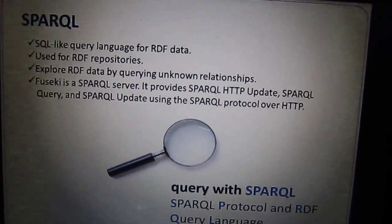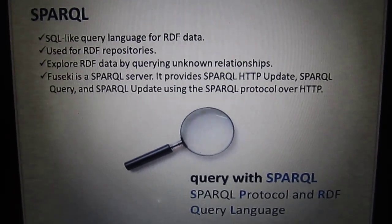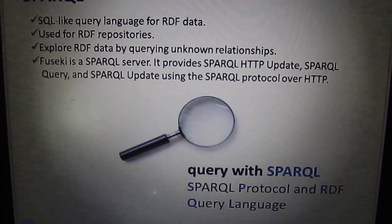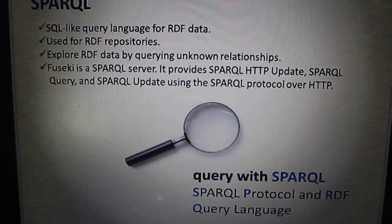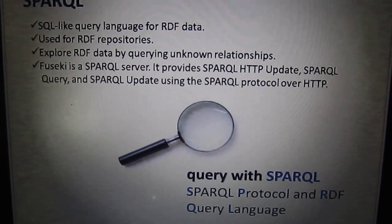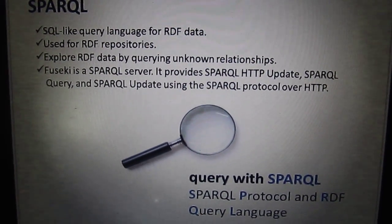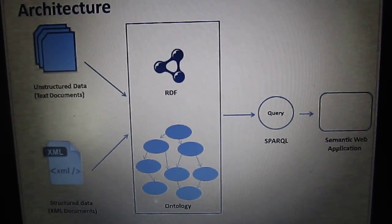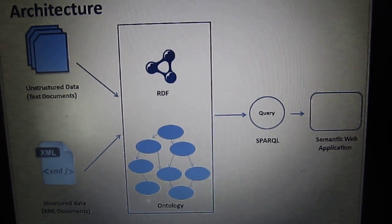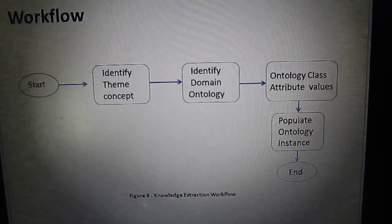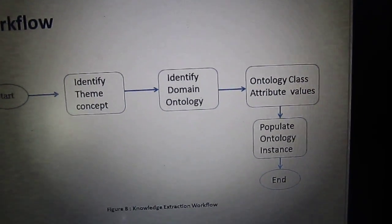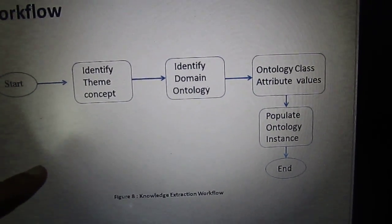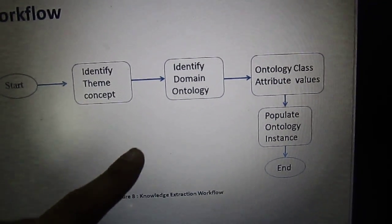In order to query OWL ontologies, we use the SPARQL language. SPARQL stands for SPARQL Protocol and RDF Query Language. Just as we query databases using SQL, we use SPARQL to query OWL and RDF data. In this architecture, we analyze a domain — for example, concepts like professor, student, and department — and the ontology will be the university ontology.